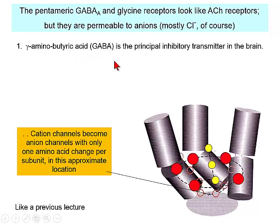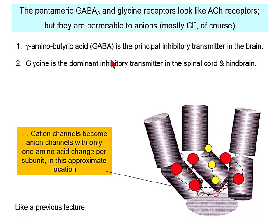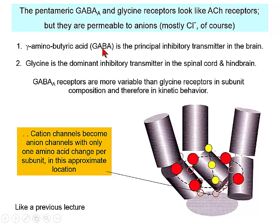GABA, gamma-aminobutyric acid, is the major inhibitory transmitter in the brain. Glycine is the dominant inhibitory transmitter in the spinal cord and in the hindbrain. GABA-A receptors are the ones that look like nicotinic acetylcholine receptors. There are also G-protein-coupled receptors activated by GABA, just as there are G-protein-coupled receptors activated by acetylcholine. There are no G-protein-coupled glycine receptors among vertebrates or invertebrates.